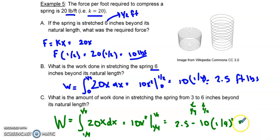But I can just do this in my calculator. I did 2.5 minus 5 over 8 gives me 1.875 foot-pounds.